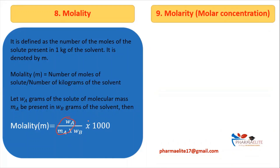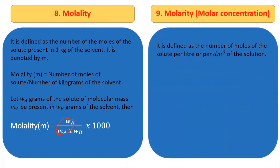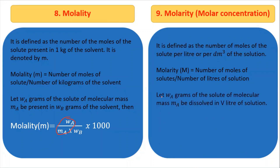The next term is molarity, also known as molar concentration. It is defined as number of moles of solute per liter (or per dm³) of solution. The formula for molarity is number of moles of solute / number of liters of solution. Consider W_A as the weight of solute with molecular mass M_A, dissolved in V liters of solution. The formula is: W_A / (M_A × V), where W_A / M_A gives moles of solute and V is already in liters, so no further conversion is needed.